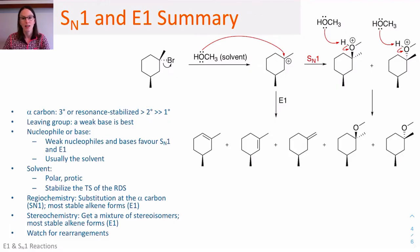But the reaction is slow to non-existent if the alpha carbon is primary or methyl. In terms of the leaving group, the leaving group has to be stable enough on its own for that activation energy to be low enough, and so a weak base is best.